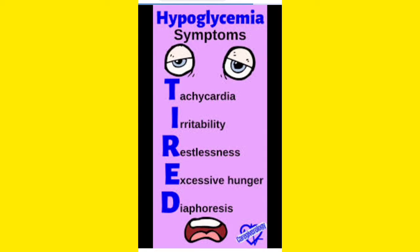E means excessive hunger — the patient will be asking for food excessively. D means diaphoresis. Diaphoresis means excessive sweating — when you are drenched in sweat, that is known as diaphoresis. So E is excessive hunger and D is diaphoresis, which is excessive sweat.